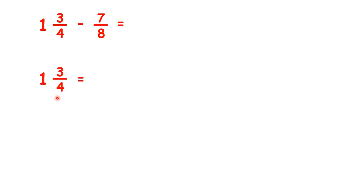And 1 and 3 quarters as an improper fraction is 7 quarters. So 1 times 4 plus 3 is 7, our numerator, and the denominator stays the same. But that's 7 quarters and we're taking away eighths. So we need to change our 7 quarters into eighths.